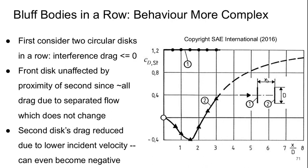Body two, on the other hand, sees reduced drag due to reduced incoming velocity because we're in the separated wake region behind body one. And the drag of body two can even become negative where it gets pulled along by the front body without increasing the drag of the front one.